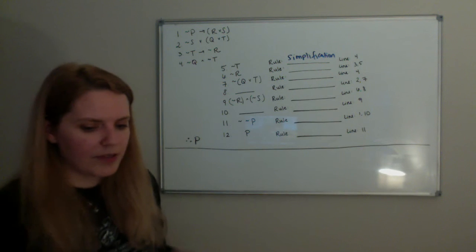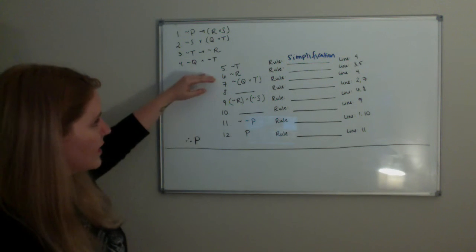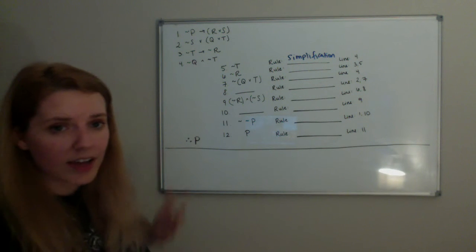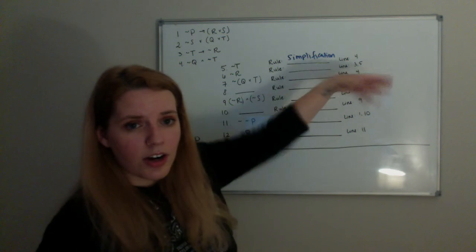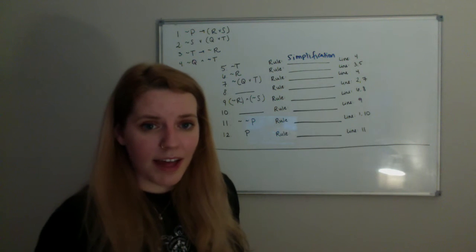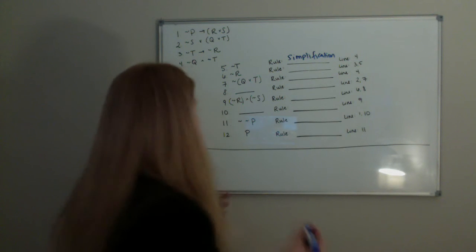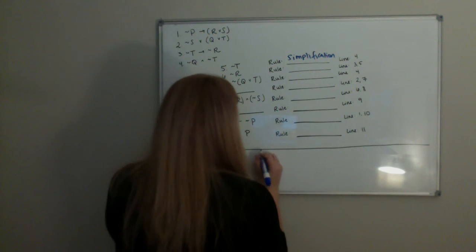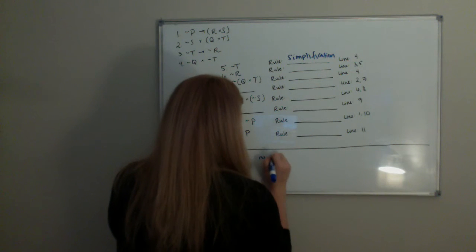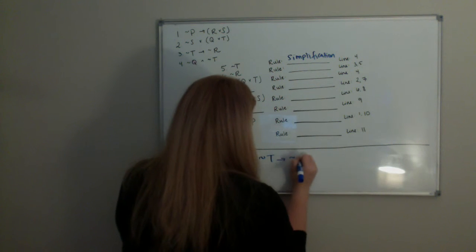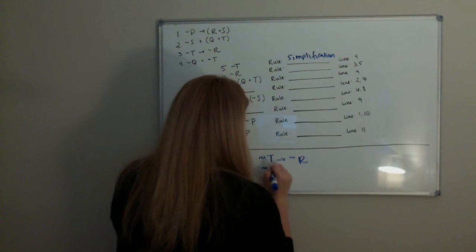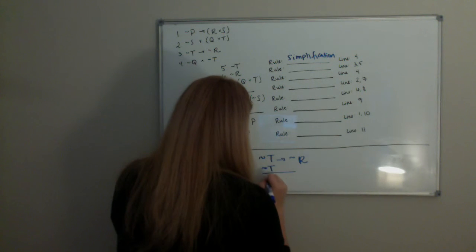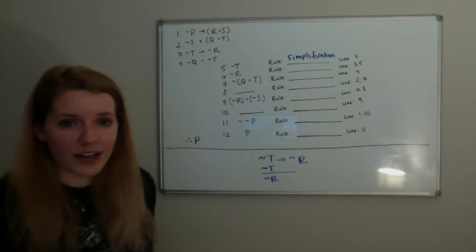Our next sub-premise, line 6, says not R. It says that we can get not R from the information in lines 3 and 5. Line 3 says if not T, then not R. And line 5 said not T. And we're saying that from this, we can deduce not R.